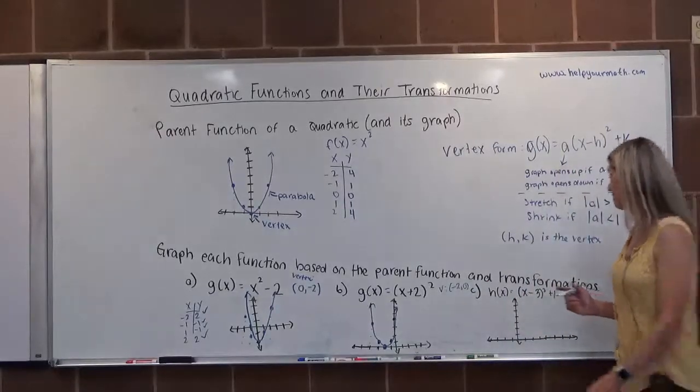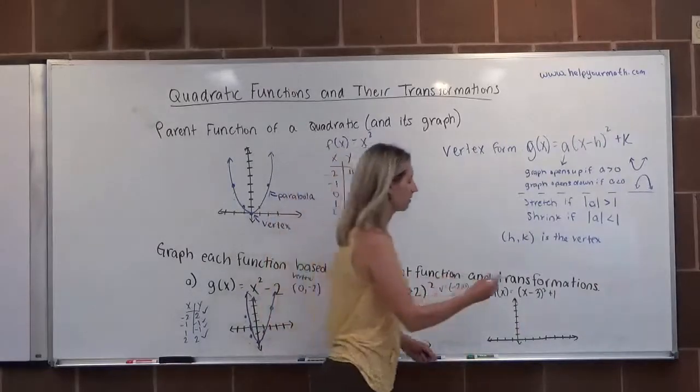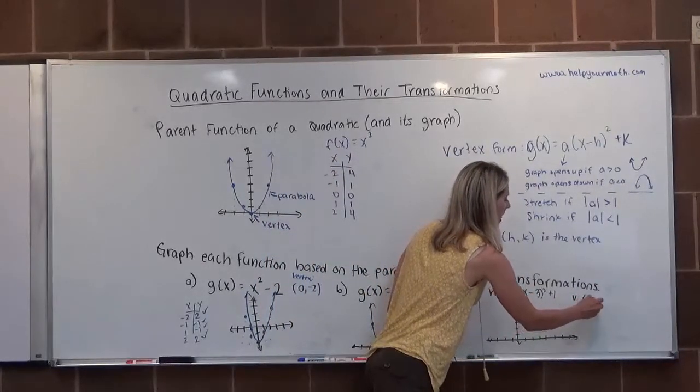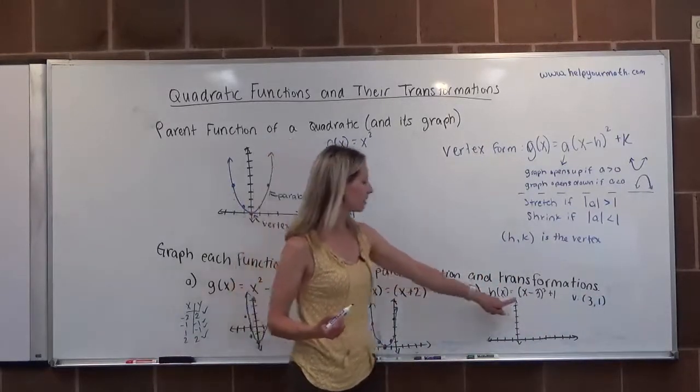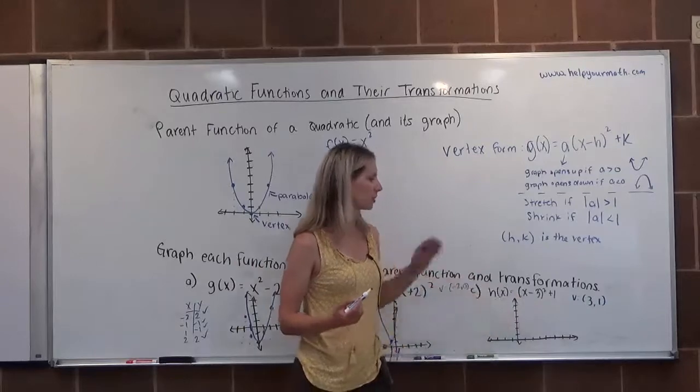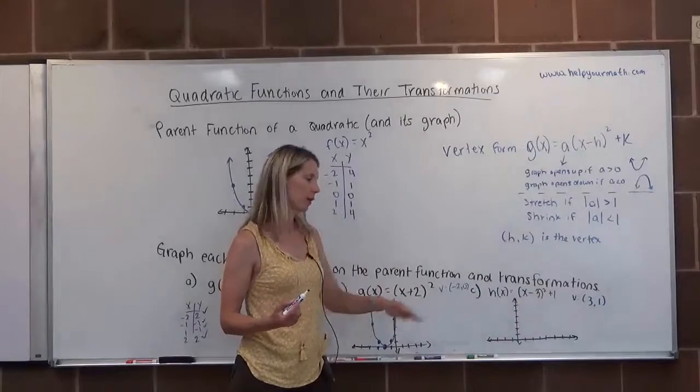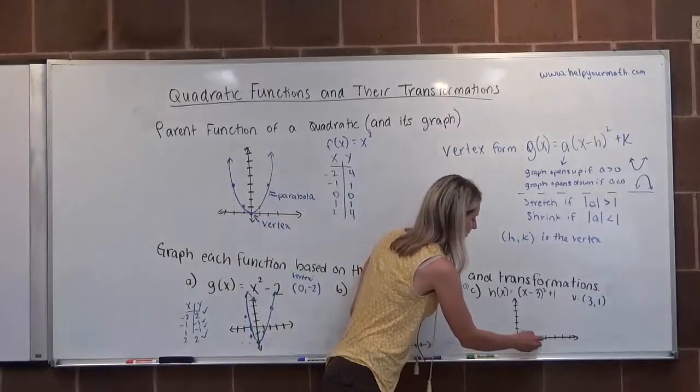For letter C, we have h(x) equals (x minus 3) squared plus 1. So this one, the vertex has moved significantly. It's moved to 3, comma 1. Okay, so it's going to be over to the right 3, right? Because it's x minus 3, so it moves to the right. It's the reverse. And then when it's outside the parentheses, it's the same. So it's plus 1, we go up 1. Alright, so 3, 1 would be 1, 2, 3, 1.